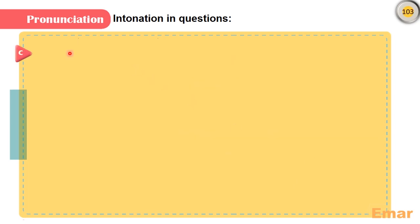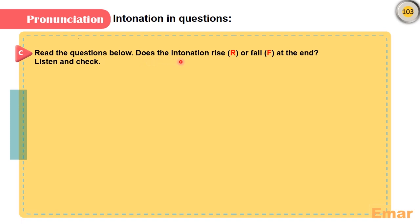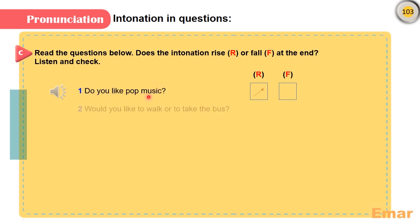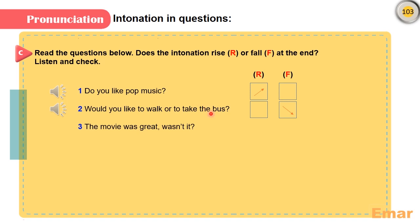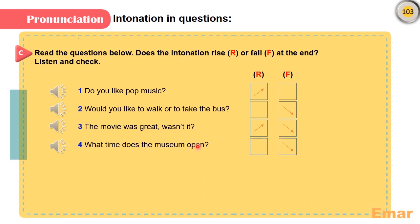Let's do the following exercise: read the questions below — does the intonation rise or fall at the end? Listen and check. 'Do you like pop music?' — it's a yes-no question, so it's a rising intonation. 'Would you like to walk or take the bus?' — falling intonation, because we have choices here. 'The movie was great, wasn't it?' — the speaker is seeking confirmation, so falling intonation in the question tag. 'What time does the museum open?' — a WH question, so it's falling intonation. 'People use first names here, don't they?' — again a question tag, the speaker is seeking confirmation, so falling intonation.